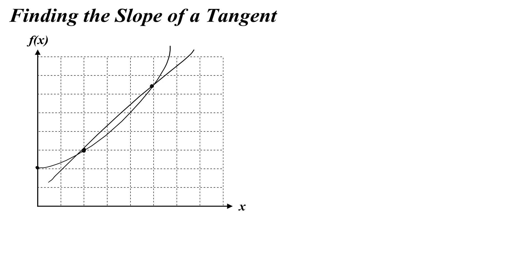The word 'secant' shares the same Latin root as scissors and scythe — so a secant line cuts the curve. We're going to find the slope of that secant line. The slope of the secant line, M-secant, is going to be the rise over the run, or delta — the change in our function f of x over delta x.